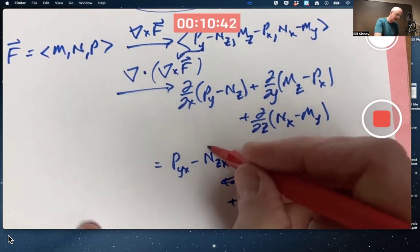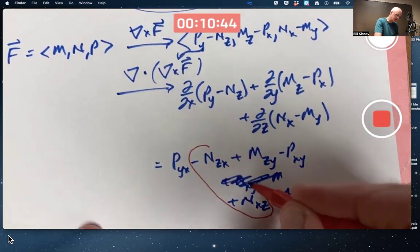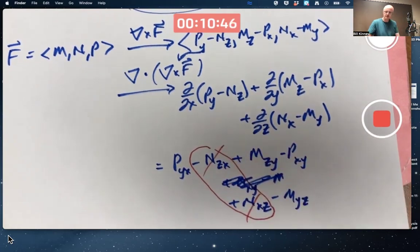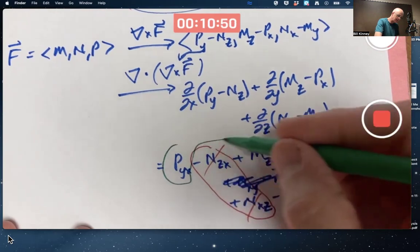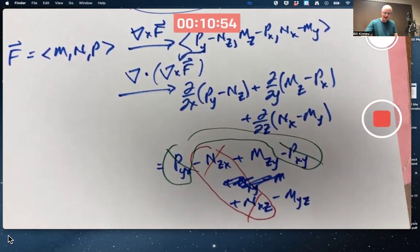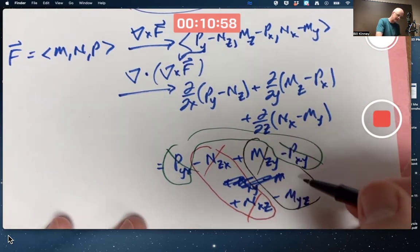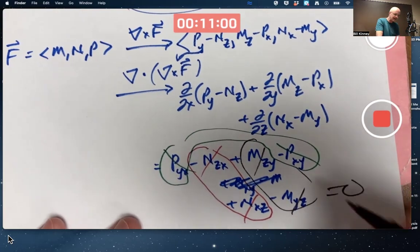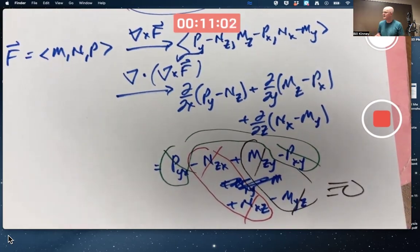Once again, you get a bunch of cancellation because of equality of mixed partials. Those would cancel. These two things would cancel. And these two things would cancel. Everything cancels to zero. Identically so. Always, no matter what X, Y, and Z are. This is also something fundamental to know. You take the divergence of a curl, you always get zero.